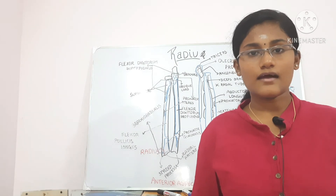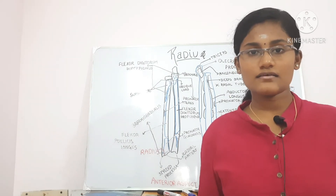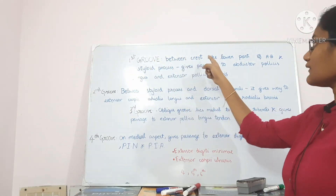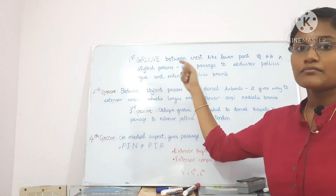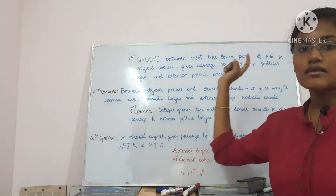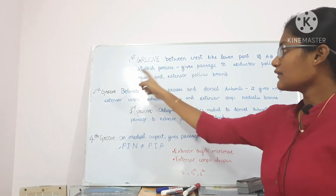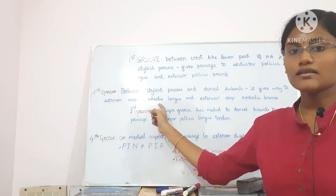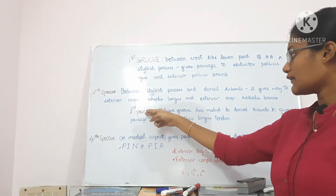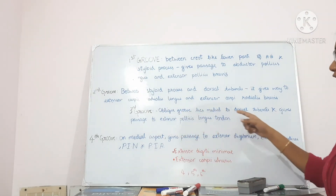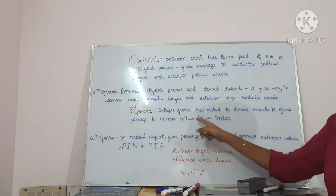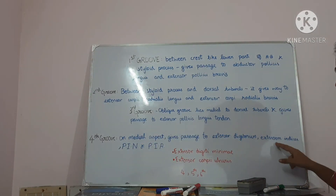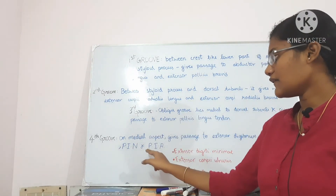Now for extra information: the four grooves on the posterior surface of the lower end. The first groove lies between the crest-like lower part of the anterior border and the styloid process, and gives passage to the abductor pollicis longus and extensor pollicis brevis tendons. The second groove lies between the styloid process and the dorsal tubercle and gives way to the extensor carpi radialis longus and extensor carpi radialis brevis tendons. The third groove, called the oblique groove, lies medial to the dorsal tubercle and gives passage to the extensor pollicis longus tendon. The fourth groove is on the medial aspect and gives passage to the extensor digitorum, extensor indicis, the posterior interosseous nerve, and the posterior interosseous artery.